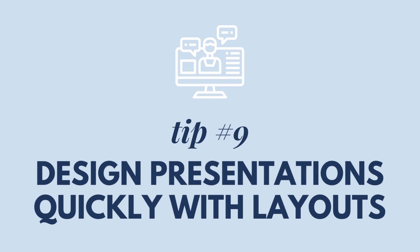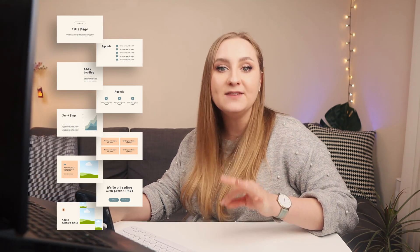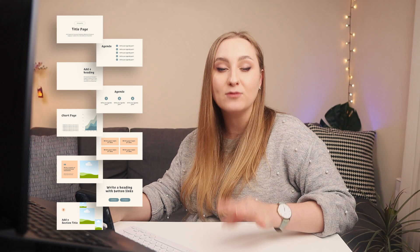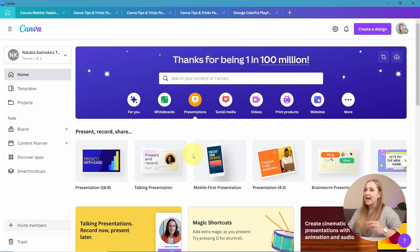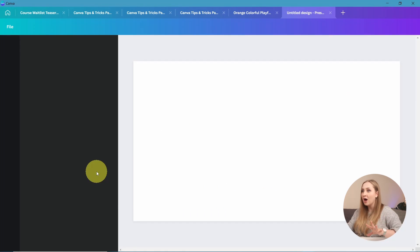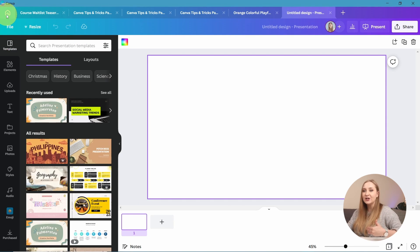Tip number nine: design presentations quickly with layouts. It's no surprise that Canva helps you create incredible presentations, and apart from using templates, you can now access a variety of presentation layouts too. To do this, choose any presentation — blank or not. Once you're in the editor, tap the Templates tab in the top left panel. Apart from the templates bar, you also have the layouts section, and you can apply any layout to your presentation with one click.